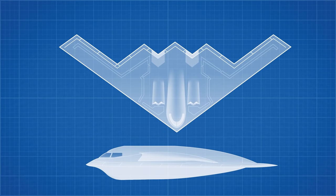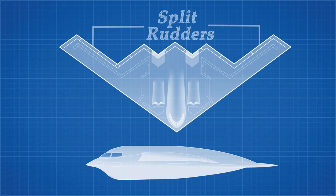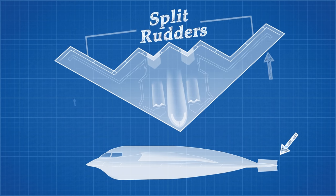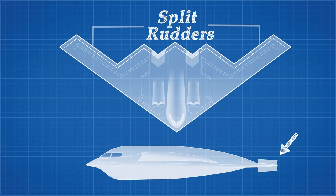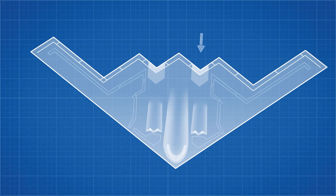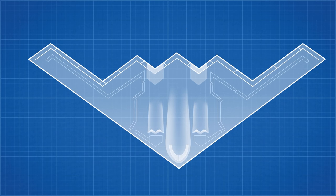The flying wing has some unique flying characteristics that took many years for Northrop to perfect. One of the most notable is the lack of a tail rudder to control yaw. The B-2 instead uses split rudders on the tips of the left and right wing, which act as air brakes to slow either side of the wing and cause a yawing motion. However, when in use the split rudders can increase the radar cross-section, so the B-2 can also use differential thrusting of its left and right engines to maintain control when stealth is a priority.